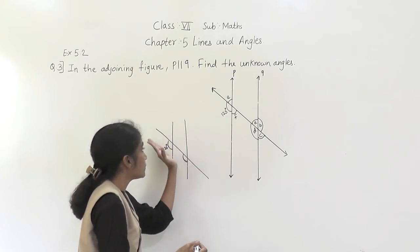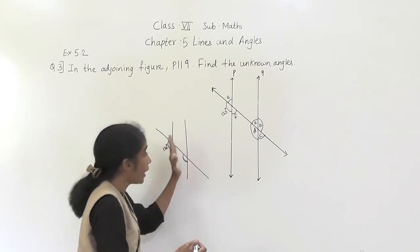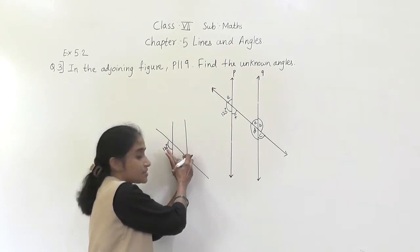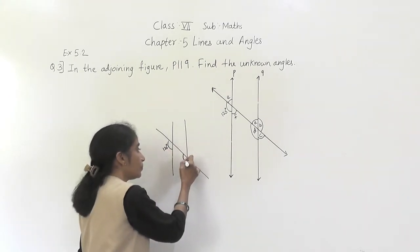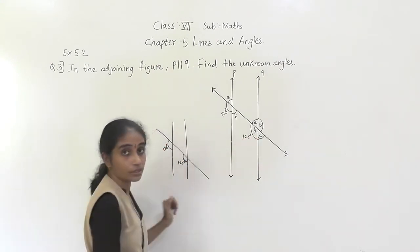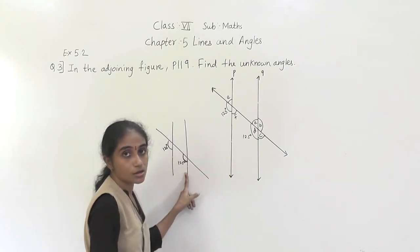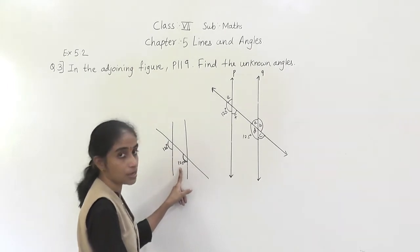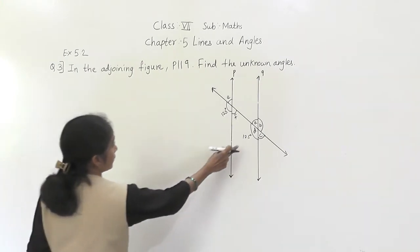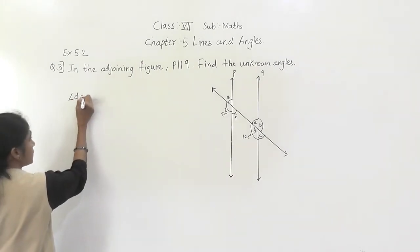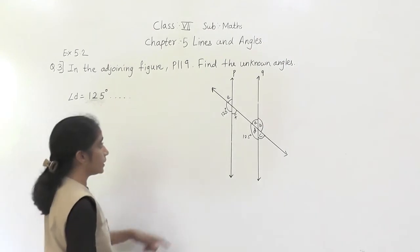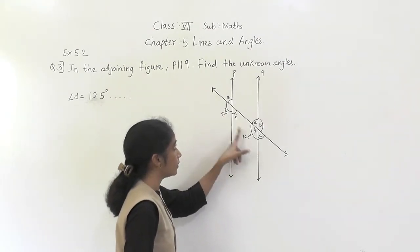Now, this is the left side of the transversal and above this line. Same way, for this angle also — above this line and left side of the transversal. So angle D will come 125 degrees. Why? Because both these angles are corresponding angles. So angle D is equal to 125 degrees. Why 125 degrees? Because it is a corresponding angle.